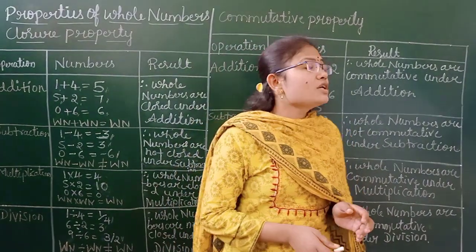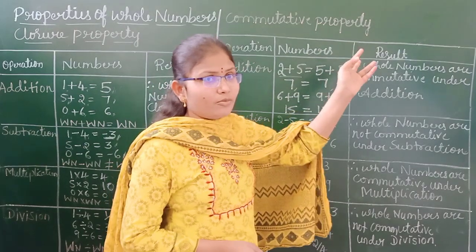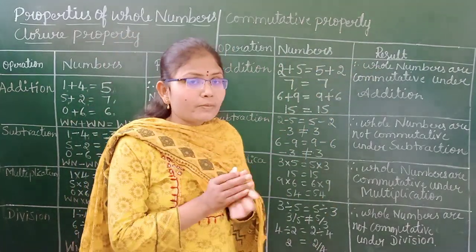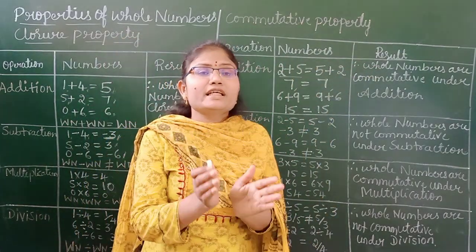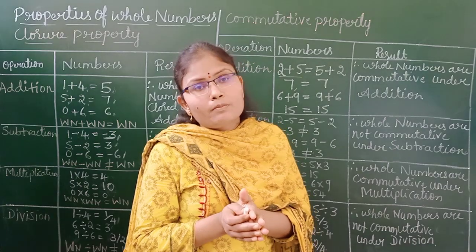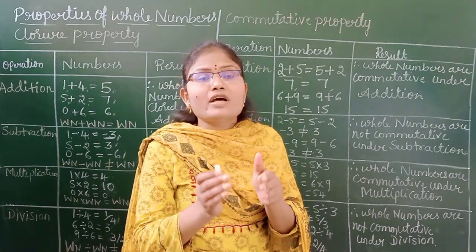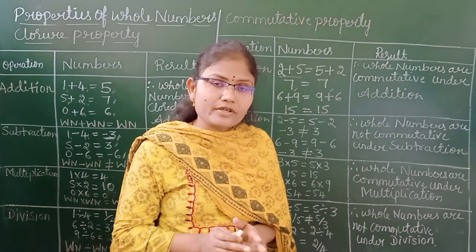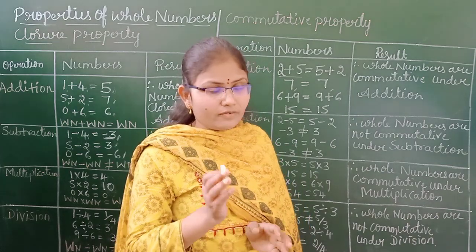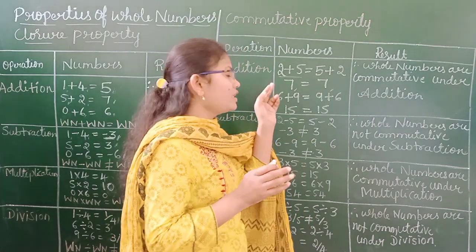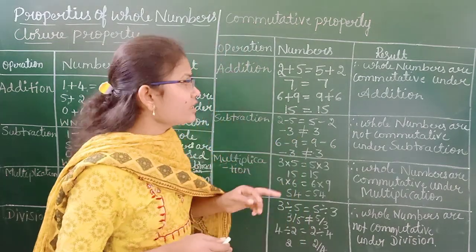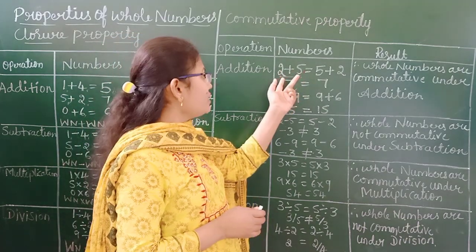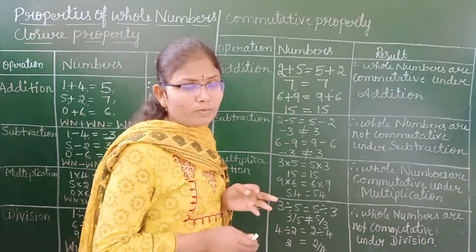Now we move on to the commutative property. Here, if you take any whole numbers and add them in any order, we need to verify whether the results are equal. For example, under addition, on the left-hand side I have taken 2 plus 5.